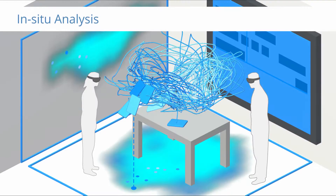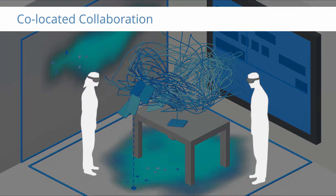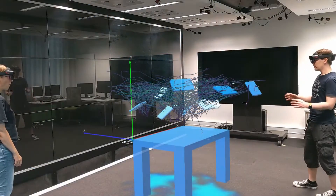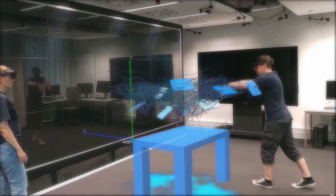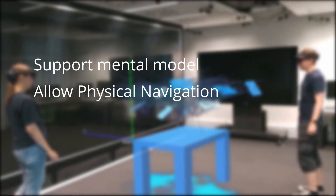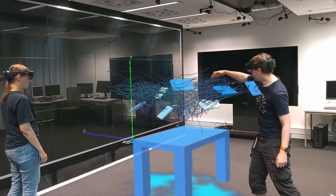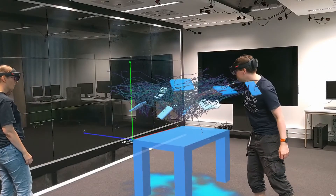The core of our concept is to enable the co-located analysis by multiple users directly in the original environment. On one hand, by placing the data in 3D space, we support the user in building a mental model of the data and allow for physical navigation. On the other hand, the impact of the physical environment on the interaction can be analyzed easily.